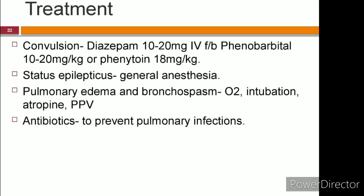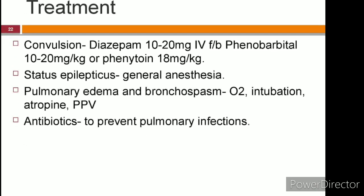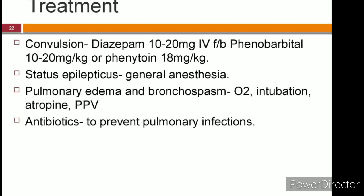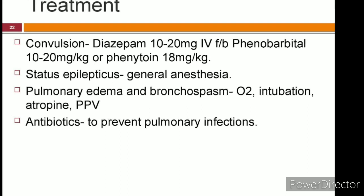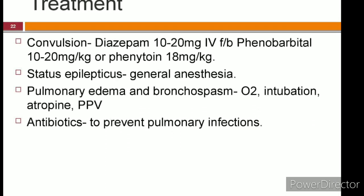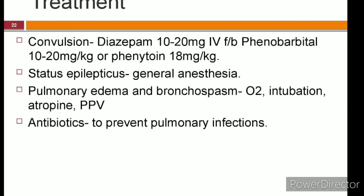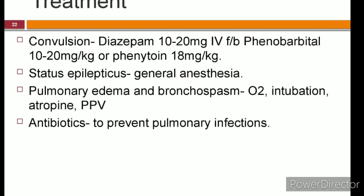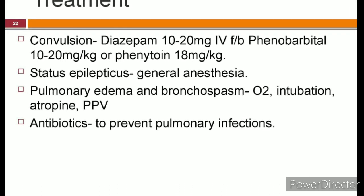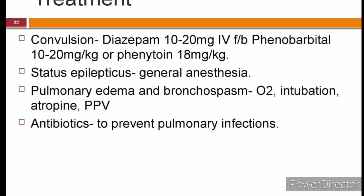Other symptomatic measures: for convulsion, diazepam at 20 mg IV followed by phenobarbital or phenytoin can be given. In status epilepticus not controlled with diazepam, general anesthesia can be given. For pulmonary edema and bronchospasm, oxygen supplementation, intubation, IV atropine, and positive pressure ventilation are the treatment of choice. Antibiotics should be given to prevent pulmonary infections.